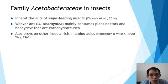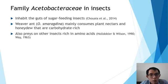Bacteria in this family are also known to inhabit the guts of sugar-feeding insects. Weaver ants, although they prey on other insects that are rich in amino acids, mainly consume plant nectars and honeydew that are rich in carbohydrates. This explains why Acetobacteraceae is found in the guts of these insects.